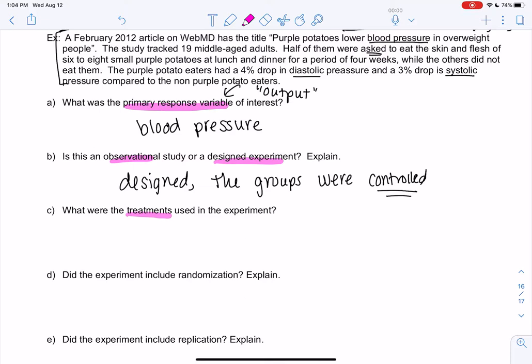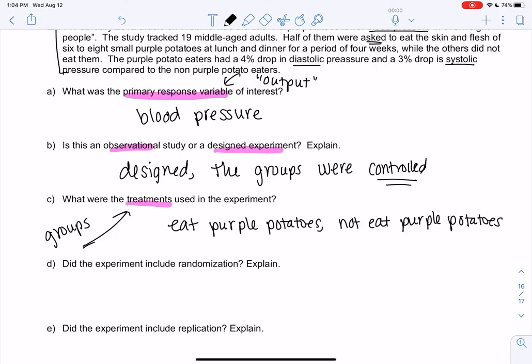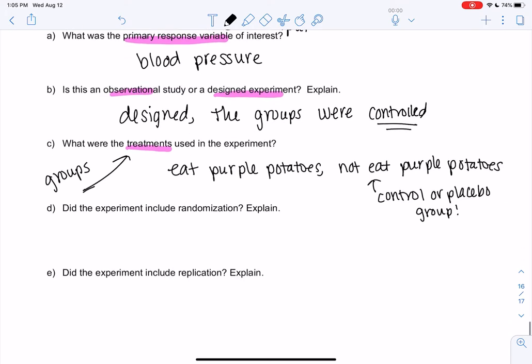Treatments was another vocab word. What are the treatments? So the treatments are the groups. So it looks like the groups were either eating purple potatoes or not eating purple potatoes. And then anybody remember not eating purple potatoes? This group, they have no treatment and we call that the control or the placebo group. They're the one with no treatment. So no potatoes would be no treatment here.